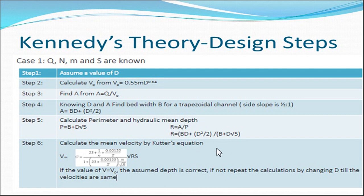For example, if V = 0.9 then V₀ should also be 0.9 — they should be nearly equal. If they are not, repeat the entire procedure with a different depth. If the initial depth of 2 m doesn't match, try 2.1, 2.2, 2.3, and so on, until V and V₀ are almost equal. That is the procedure for Case 1 where Q, n, m, and s are given.